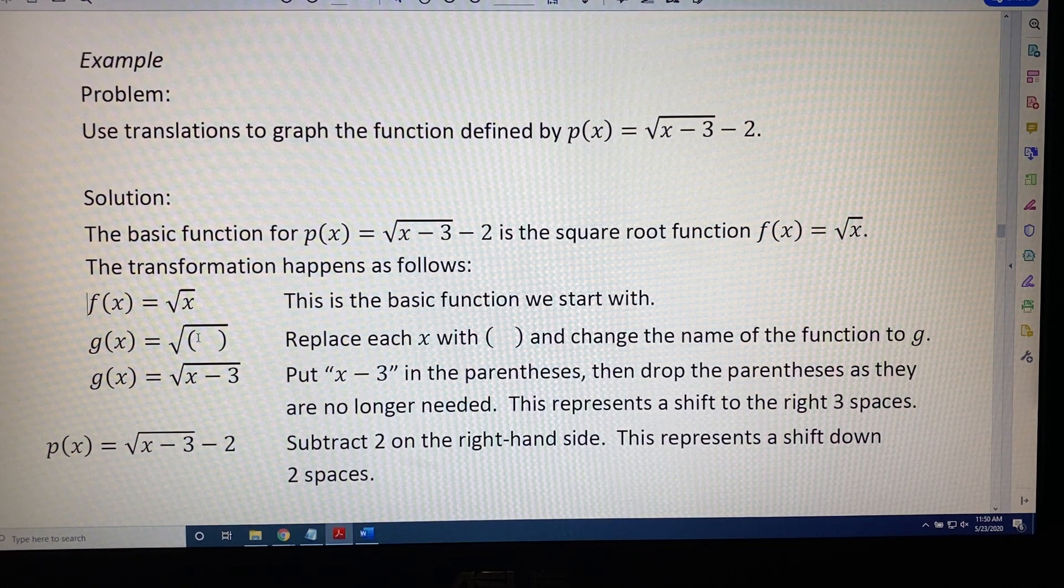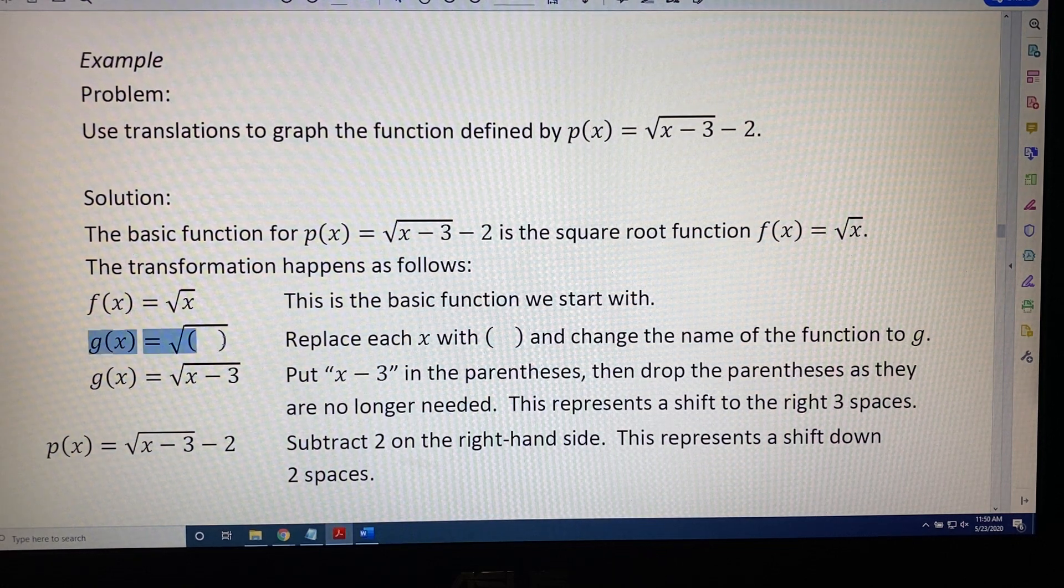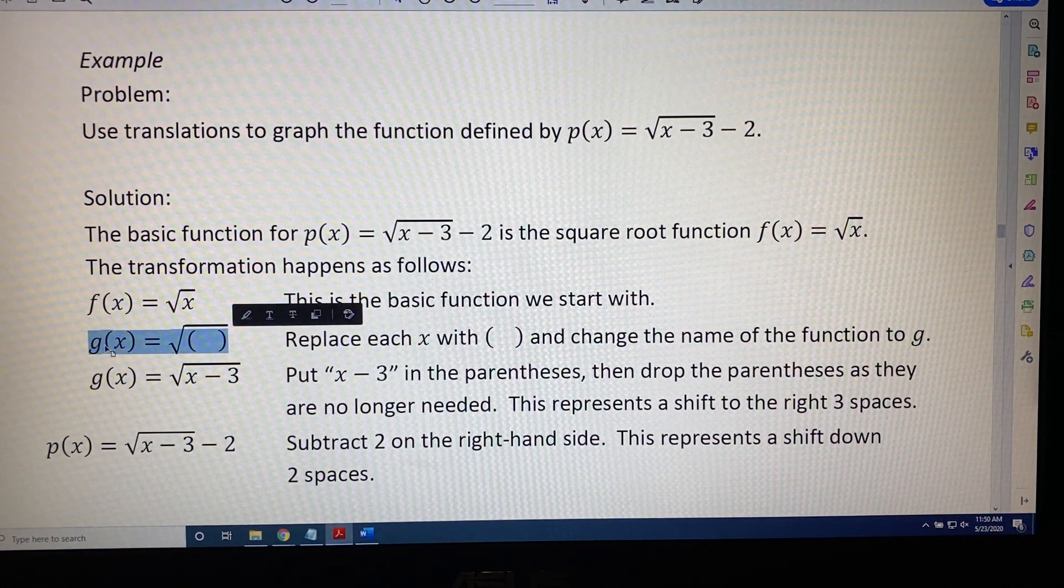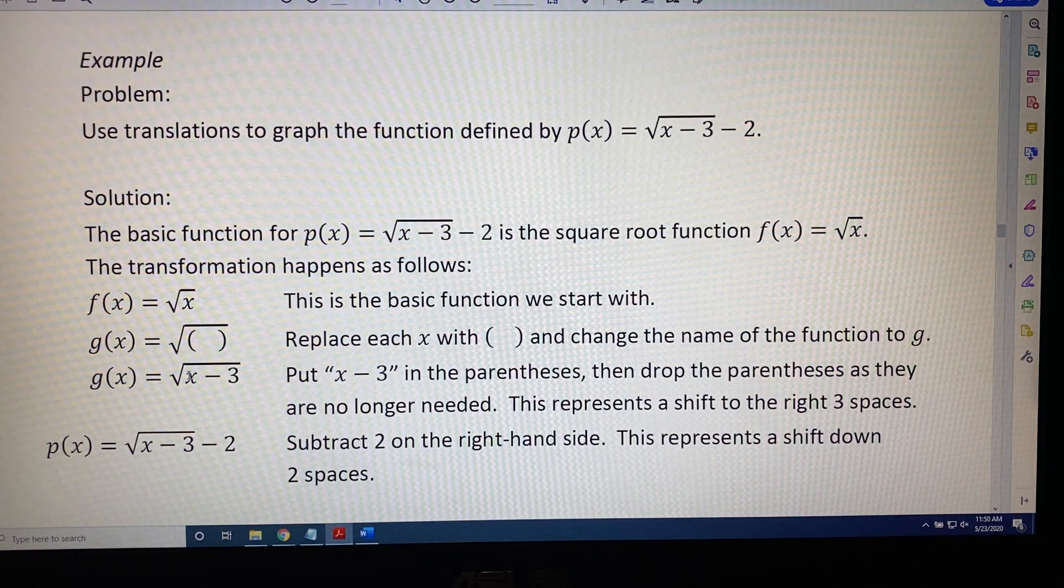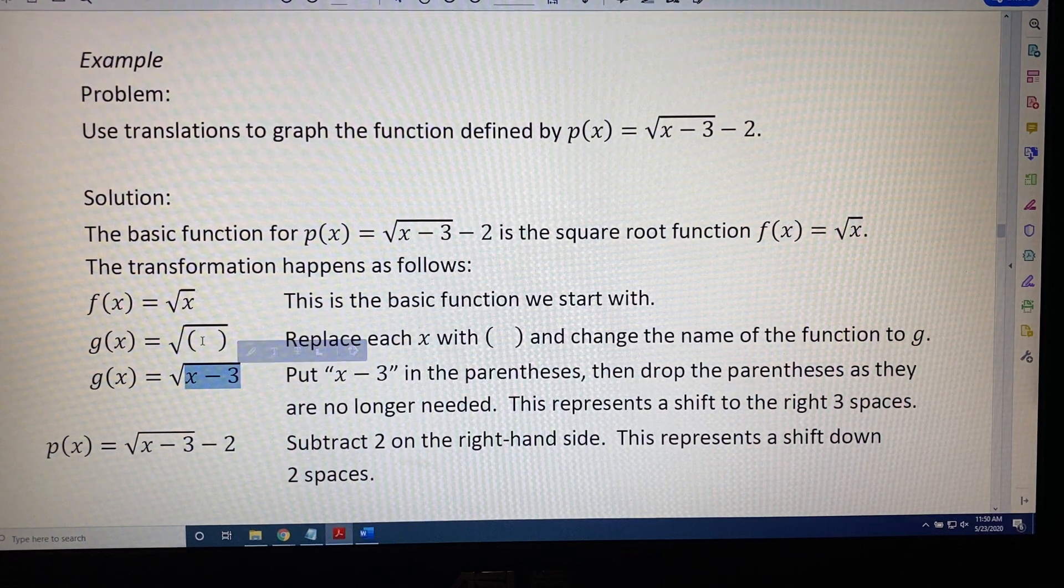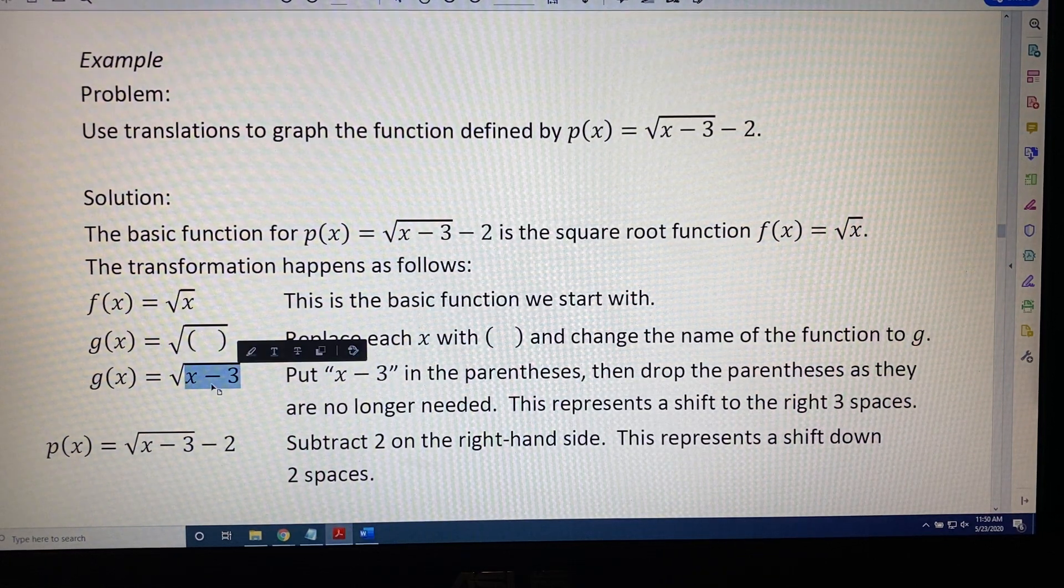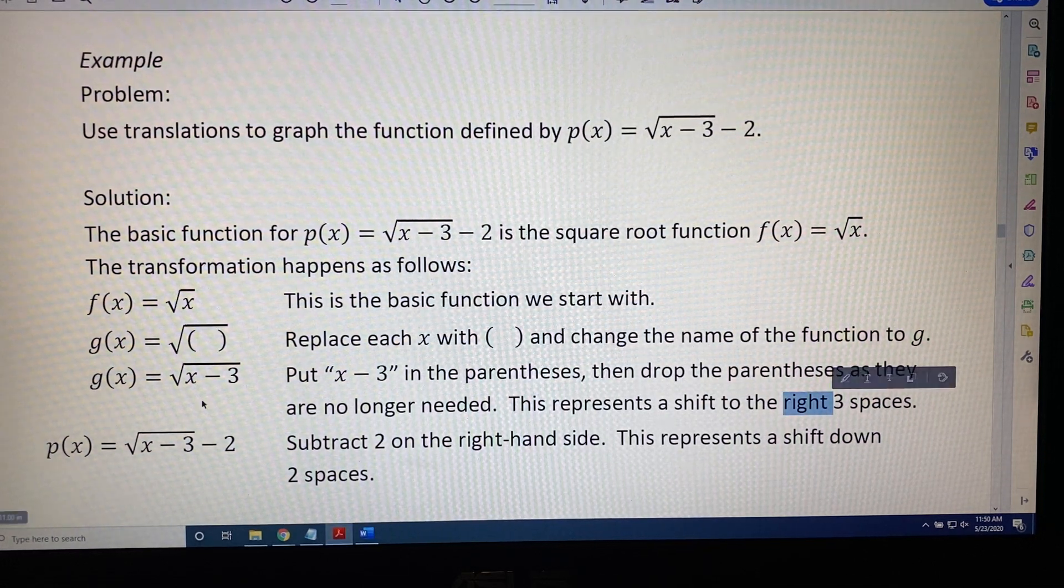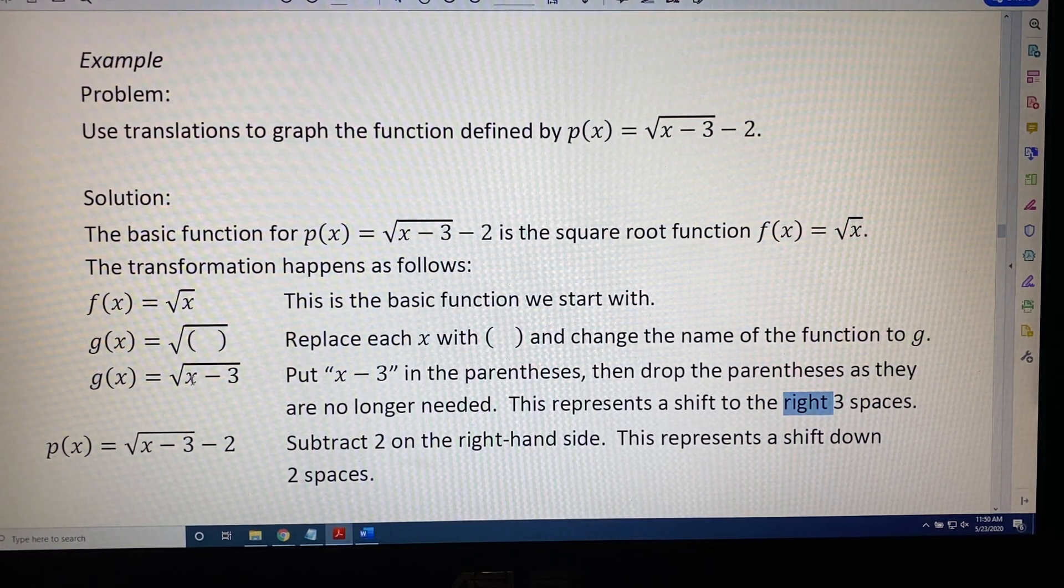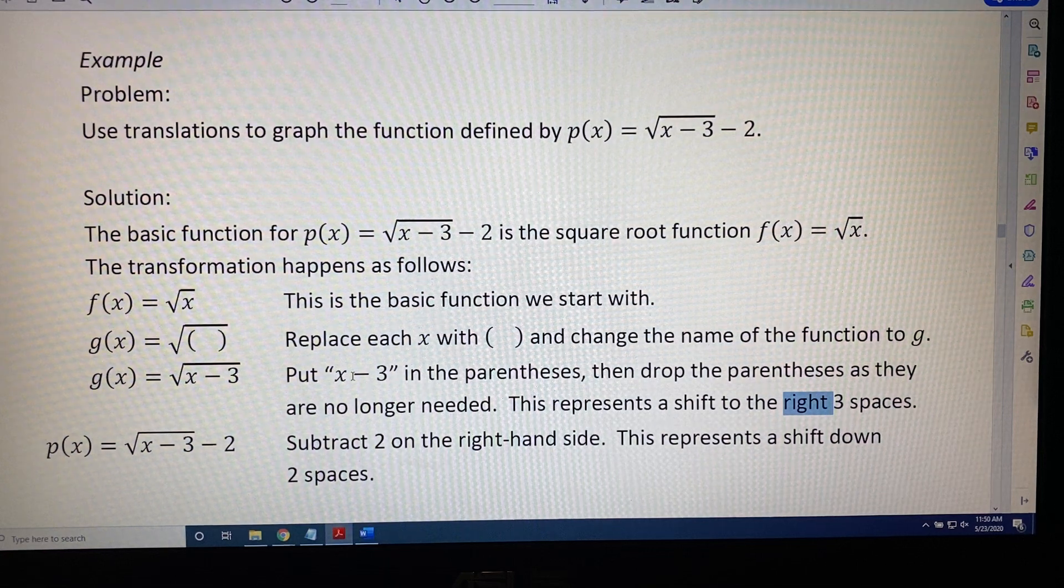Next, we replace the x with a pair of parentheses and change the name of the function to g. Next, we have to put x minus 3 in place of the parentheses, and we note that this represents a shift to the right three spaces because we replaced with x minus something.